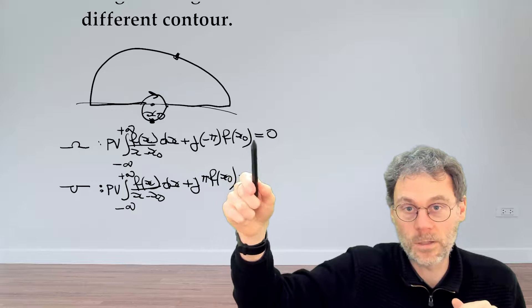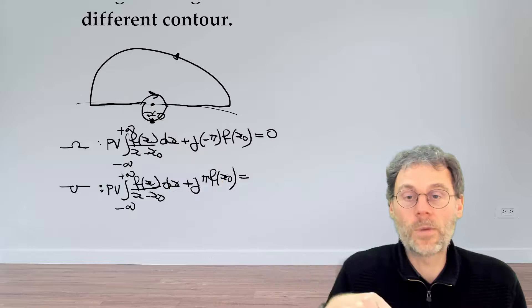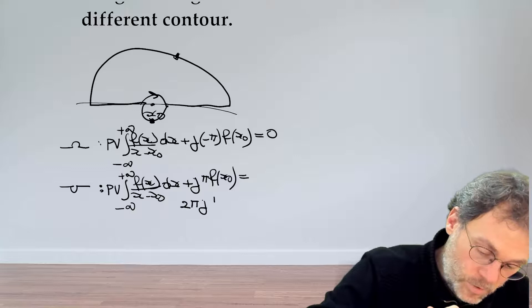Now this becomes different because if we close it like this we do need to worry about the singularity there. So we will have a contribution, the right hand side being equal to 2 pi j times the residue at the point x0.